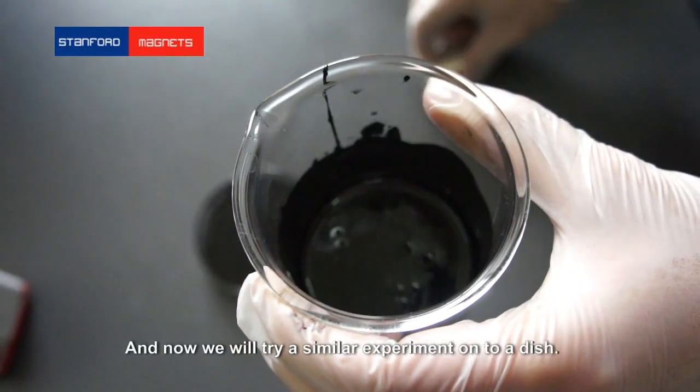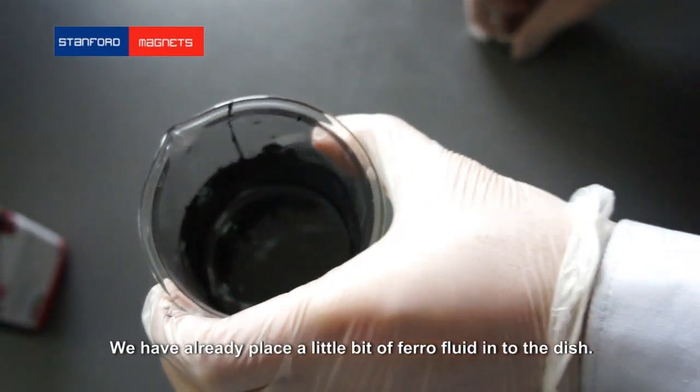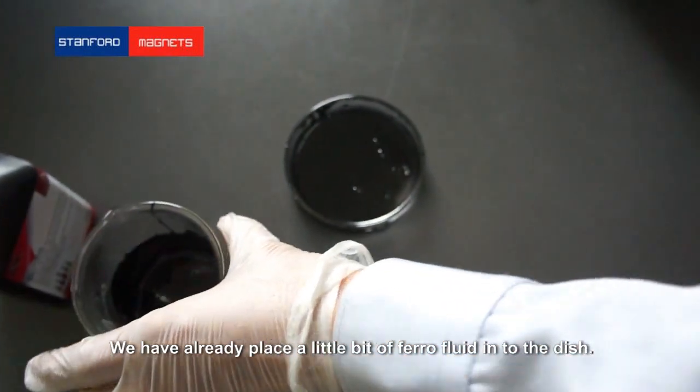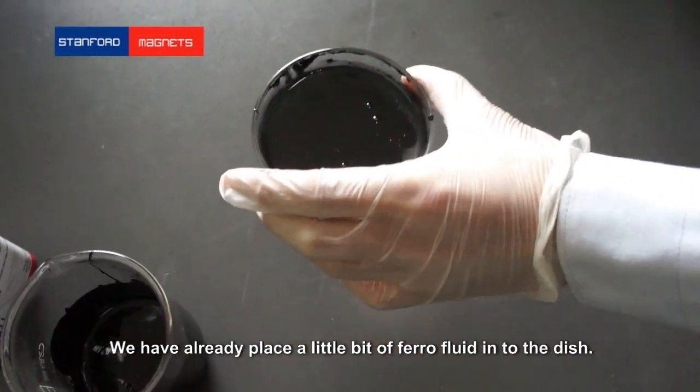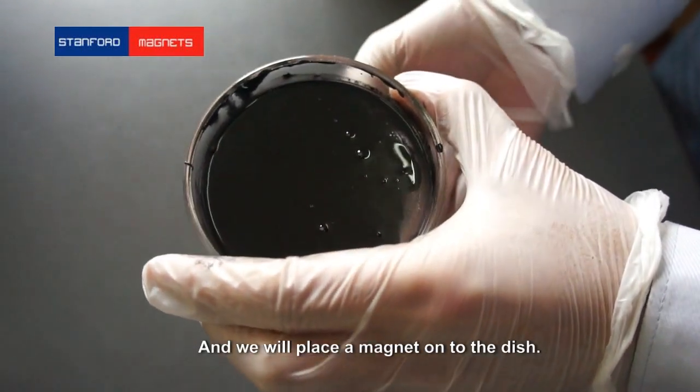And now we will try a similar experiment onto a dish. We have already placed a little bit of the ferrofluid into the dish, and we will place the magnet under the dish.